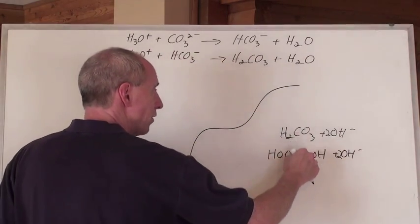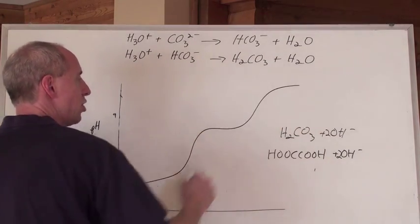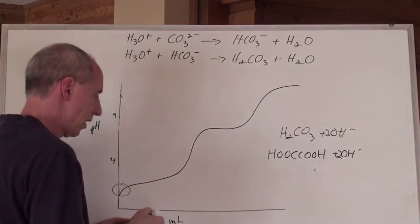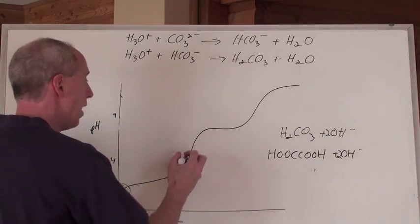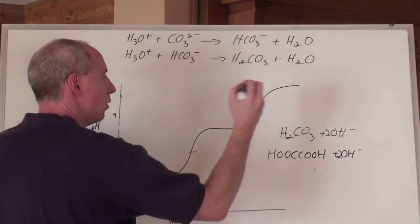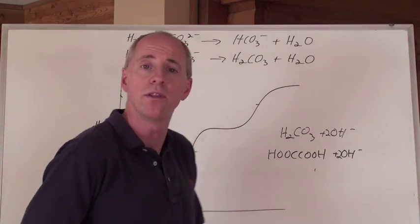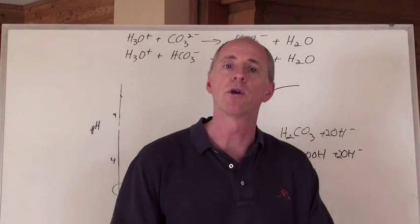Either of those two acids could give that type of shape for a titration curve. Methyl orange would work for the lower equivalence point, and phenolphthalein for the higher one.